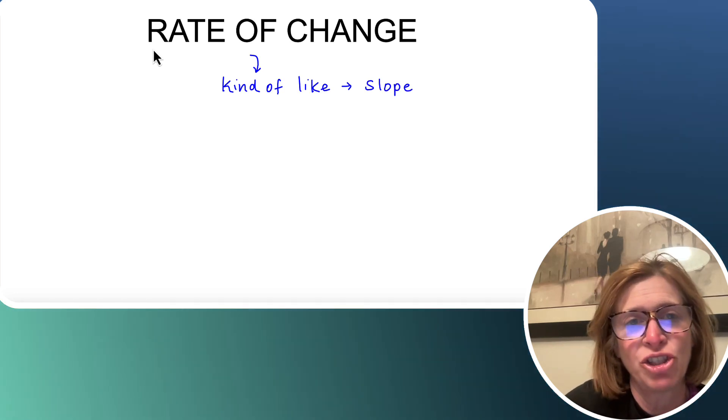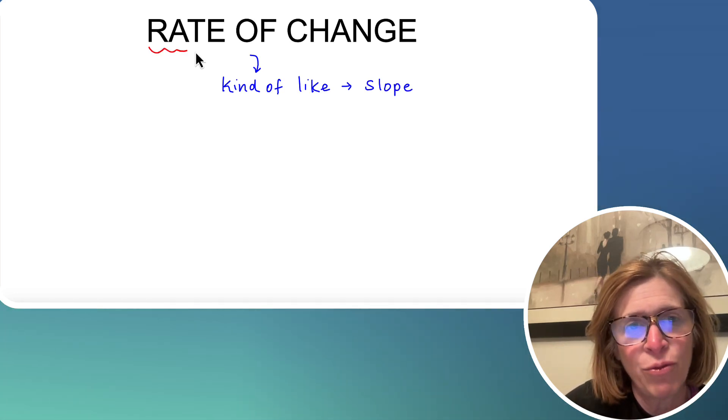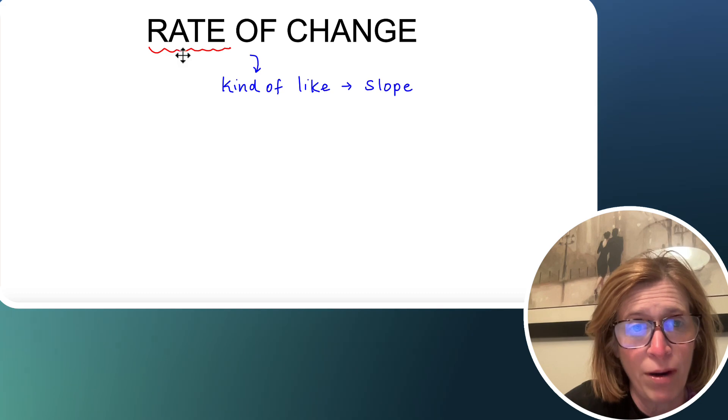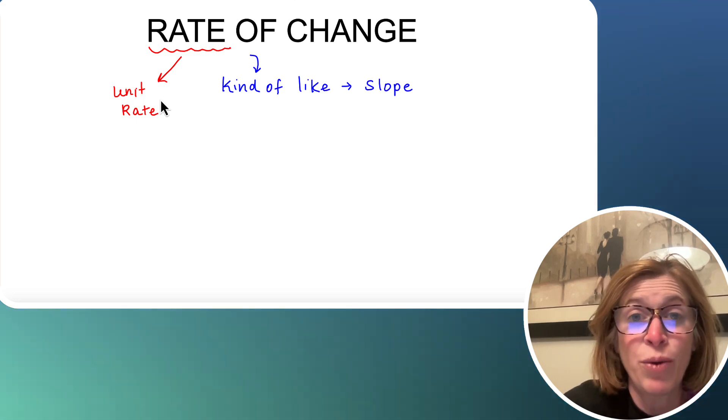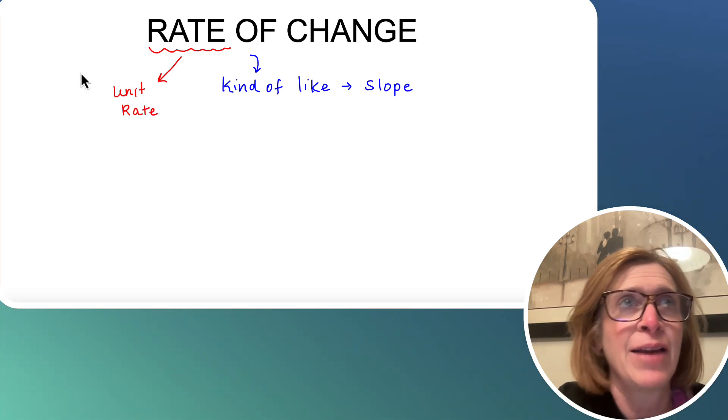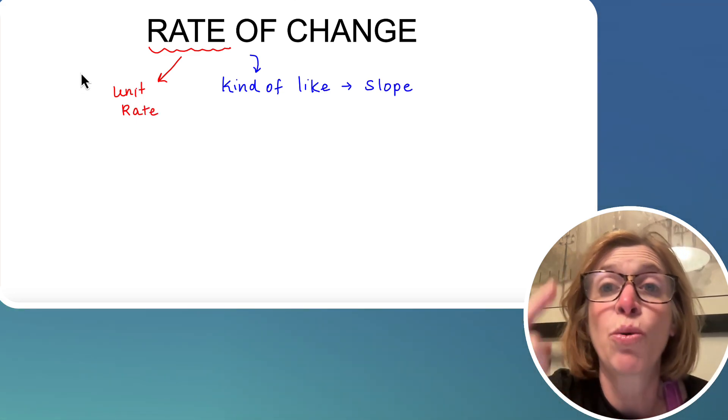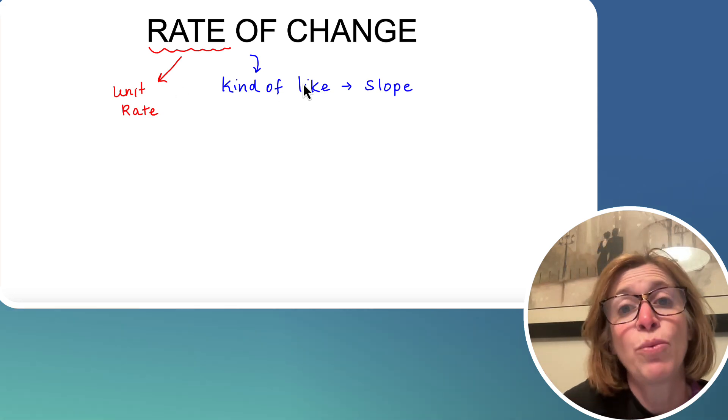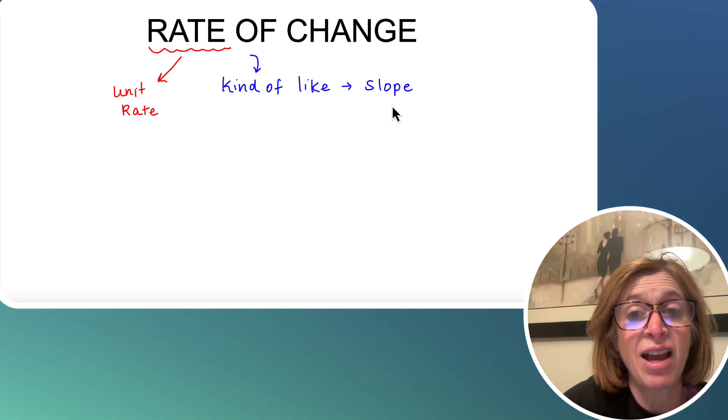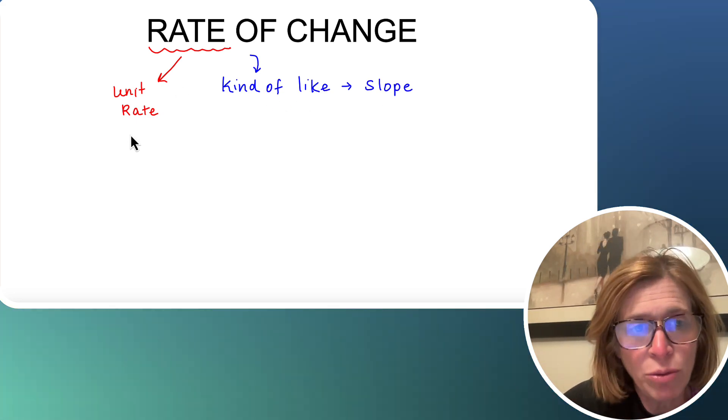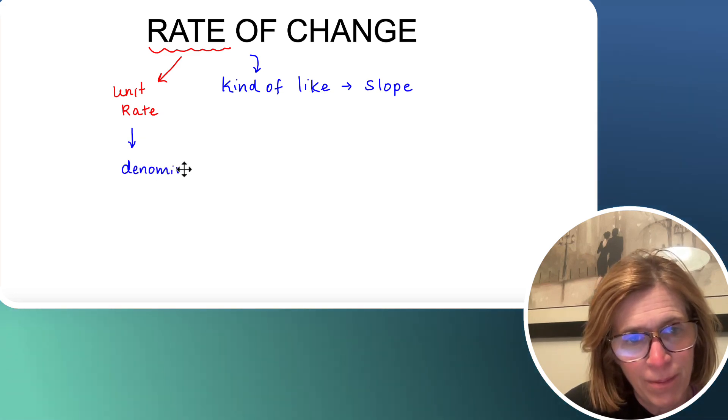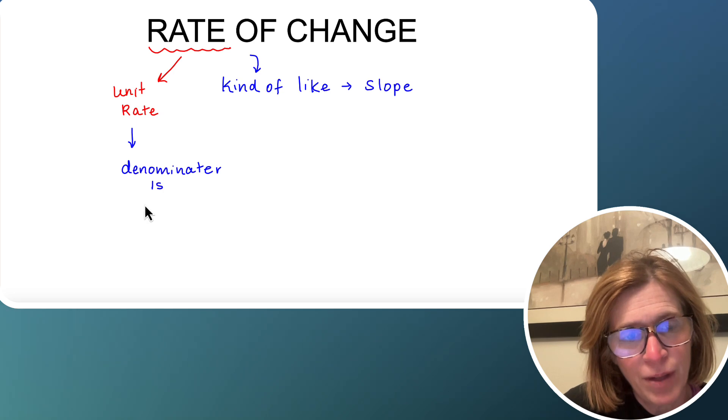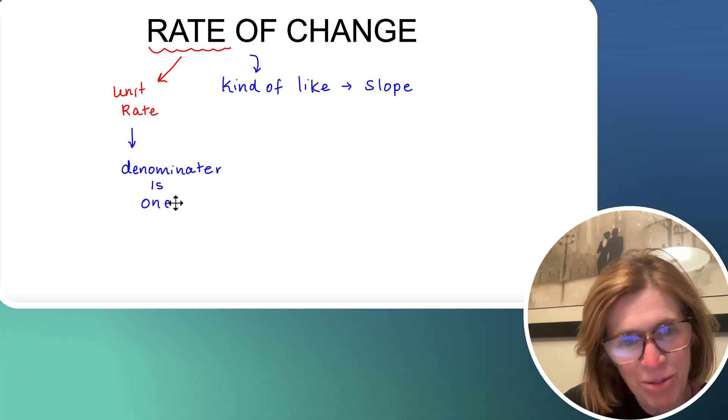The thing about a rate of change is that I want you to think of where you've heard the word rates before. It's a unit rate. So a unit rate would be when you did like five apples was $3. How much does one apple cost? So when we're doing a rate of change, and it's kind of like slope, you just want to ensure that your denominator is one.